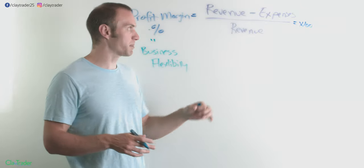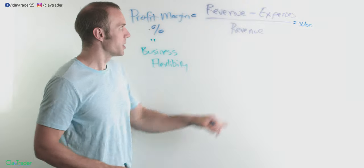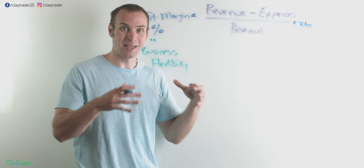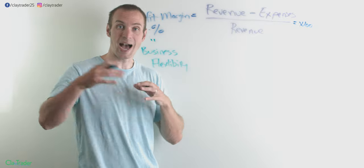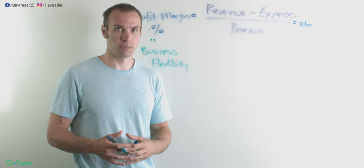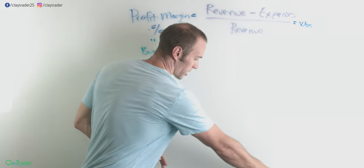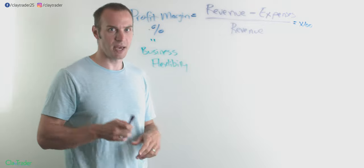And the flexibility is based on this percentage. Meaning the lower that number is, the lower the percentage, the lower the profit margin, the less and less flexible it is. The higher that percentage, the more flexible it is. So what exactly do I mean by that? Let me get a couple of scenarios set up and then I'll see you back here in just a second.